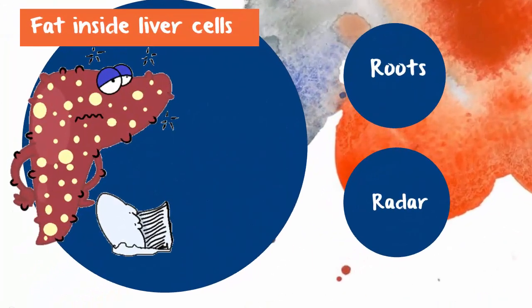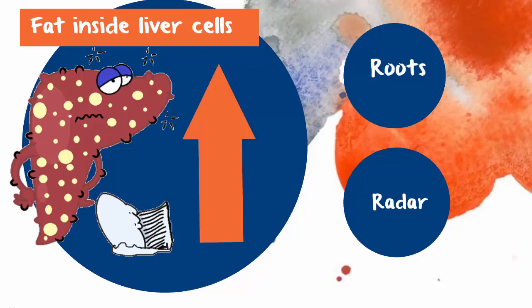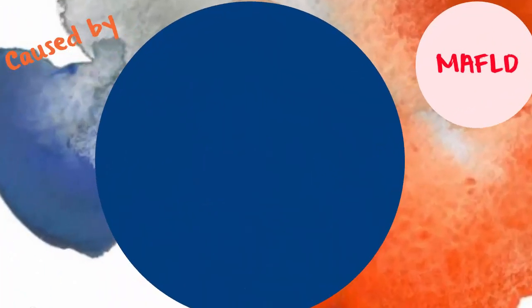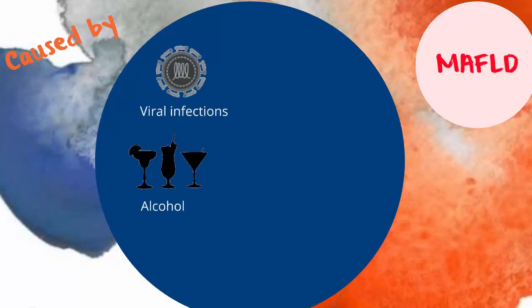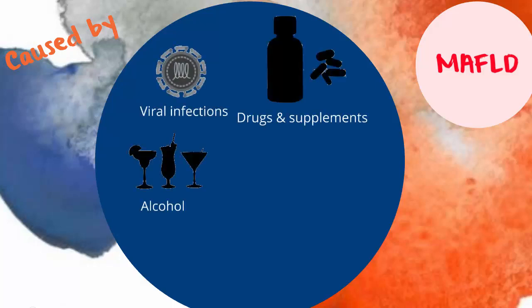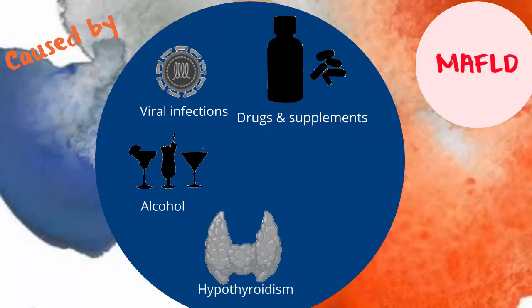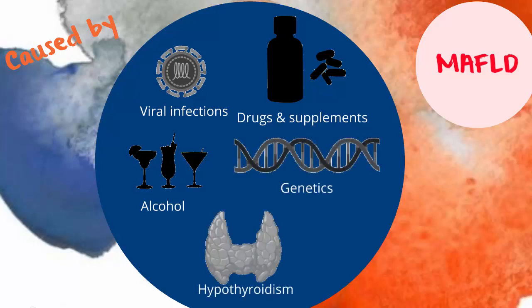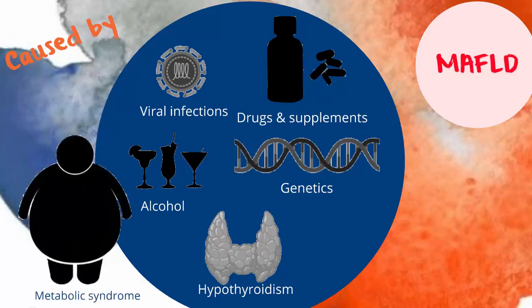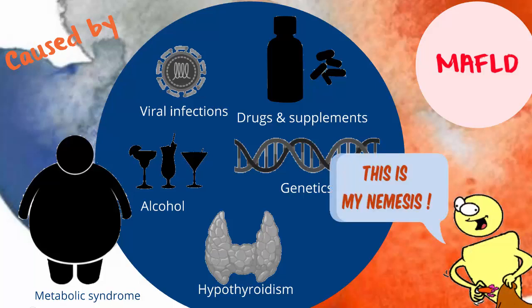If you're insulin resistant, odds are you have fatty liver. Now you can have fatty liver without metabolic syndrome — too much alcohol, viral infections, several commonly used drugs and supplements, hyperthyroidism, and bad genes can all cause liver cells to accumulate too much fat. But metabolic syndrome is the biggest driver. In fact, there is a school of thought that thinks fatty liver alters the paracrine and endocrine functions of the liver to cause insulin resistance.